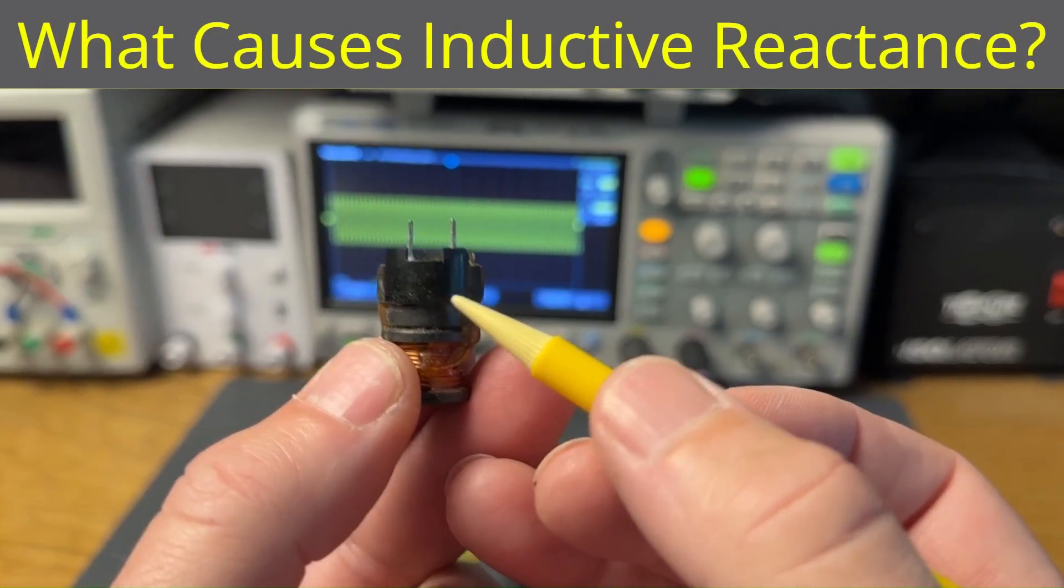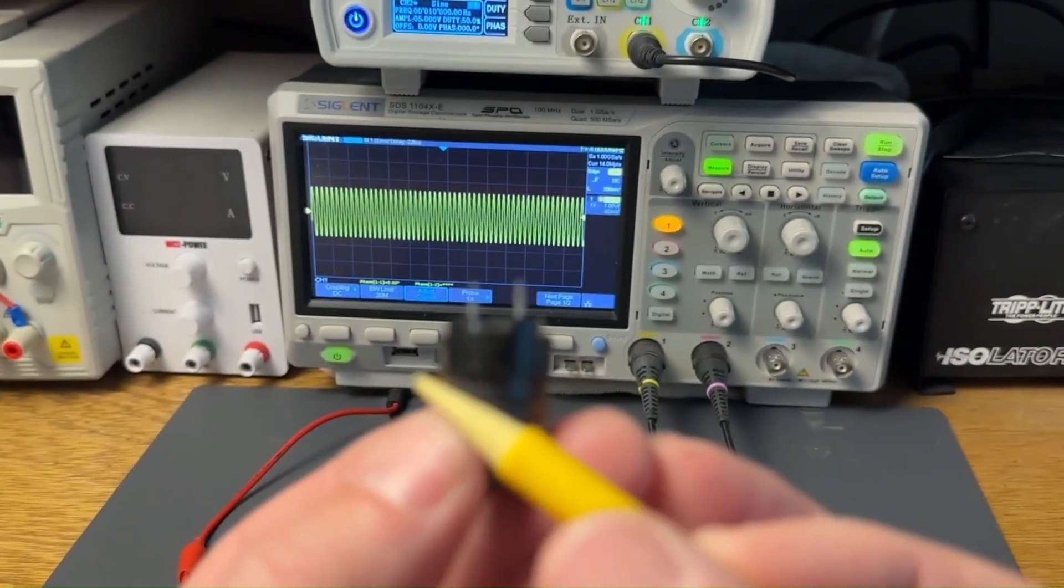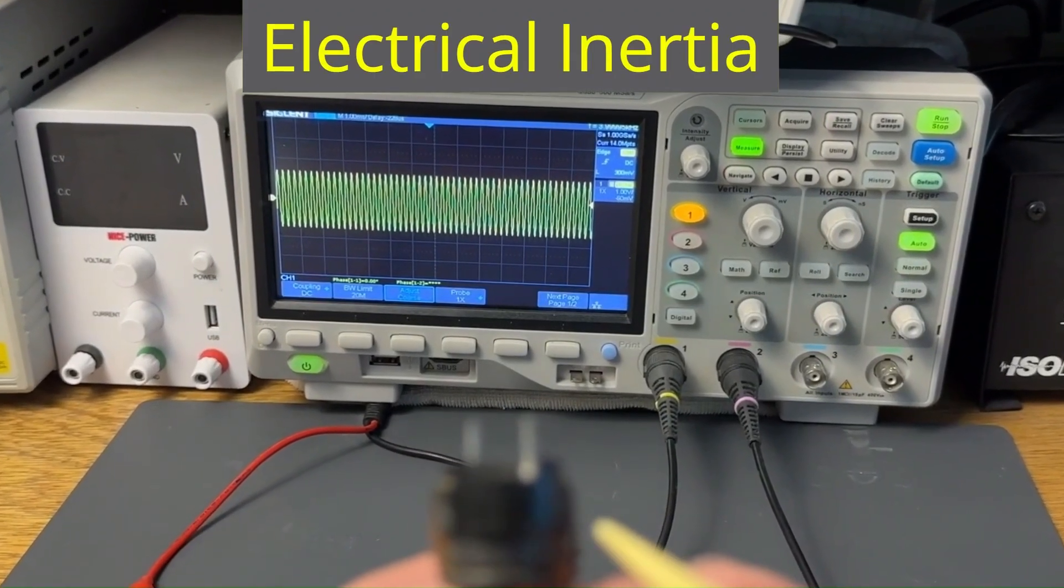Inductors, by their nature, resist changes in current because their magnetic field stores energy that results in a form of electrical inertia. The faster you try to change the current to an inductor, the more it will push back.